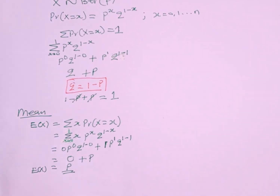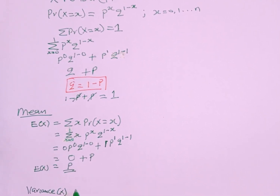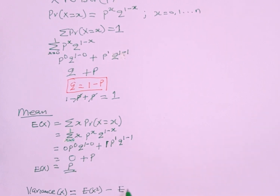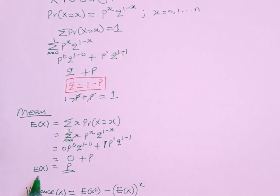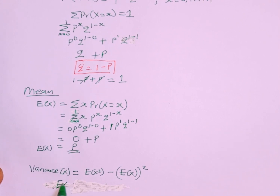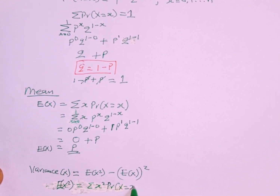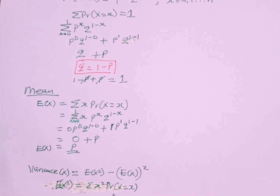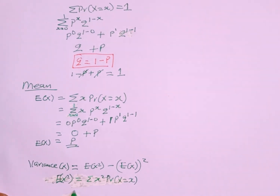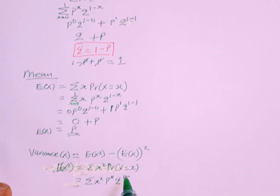Now let's find the variance. The variance of X, where X is distributed Bernoulli with parameter p, equals E[X²] minus (E[X])². We already have E[X] = p, so we need to find E[X²]. The expected value of X² equals the summation of x² times p^x · q^(1−x), with x ranging from 0 to 1.